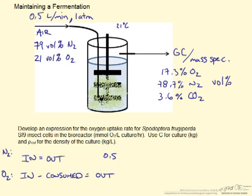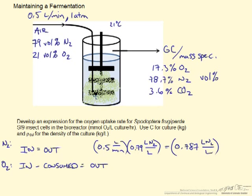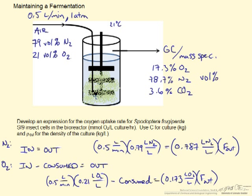We could write the nitrogen balance with the information that we are given. The flow rate of nitrogen, again make sure to use our correct units, is going to be 79 volume percent. So that means liters of nitrogen per liter total. This is going to be equal to the same out, 0.787 liters of nitrogen per liter. But we don't really know the flow rate out. So let's just call that F_out. For the oxygen we could do a similar balance.